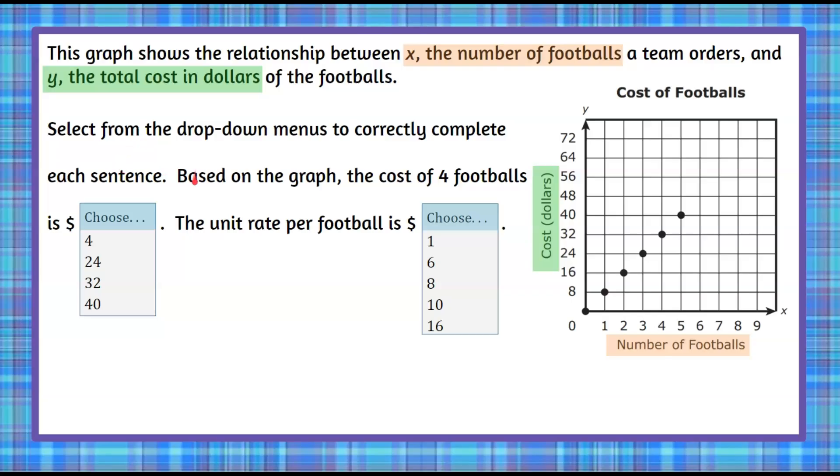We're going to select from the drop-down menus. And the first one we're going to do is, based on this graph, the cost of four footballs. So we're going to go over to our x-axis because that's the number of footballs. And we're going to look at four footballs because that's what we're finding the cost of. So we're going to go up to the data point and then over to the y-axis to find out that if we buy four footballs, it's going to cost us $32. So the cost of four footballs is $32.